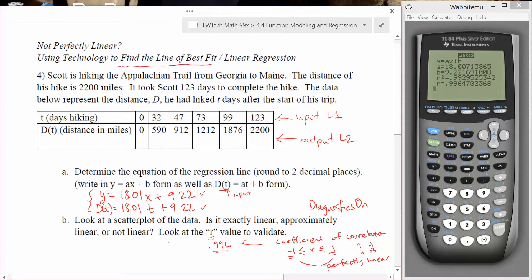So I'm expecting that my data, based on this r value, I'm expecting this data point to look not exactly linear because it's not equal to one, but I am expecting it to look approximately linear based on my r value. Let's go ahead and take a peek at the scatter plot. The graphing calculator will do that for us.